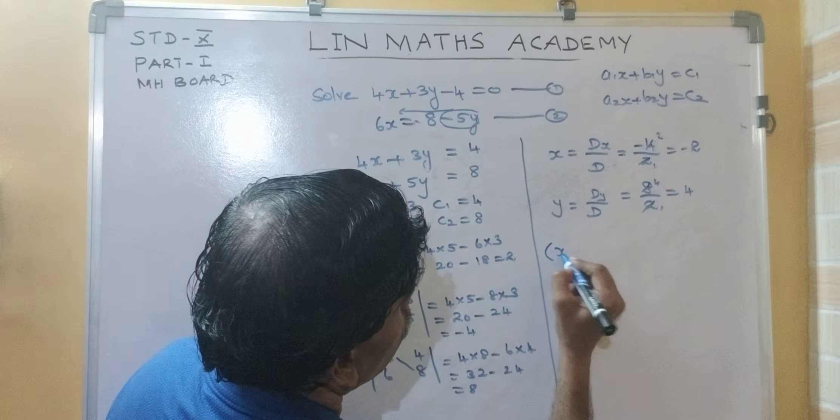Very simple. Quickly can find out. What is d? a1, b1, a2, b2. 4, 4, 3, 6, 2.